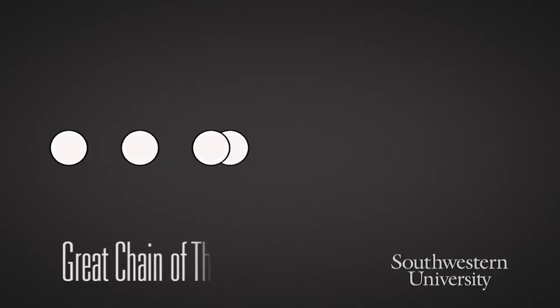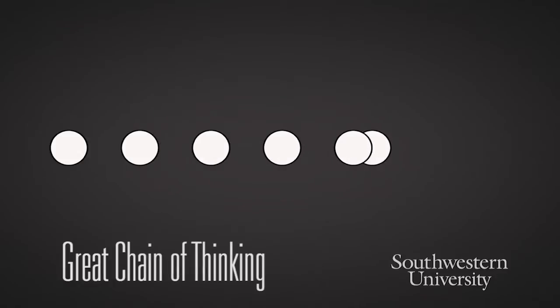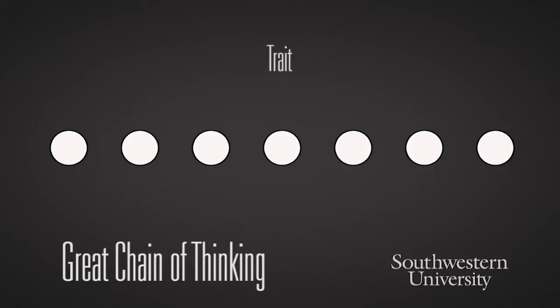Let me give you an example of how this works. I find that the use of seven circles works best. If you can make five logical links between two words, then you have a quality understanding of how these topics connect. So let's choose two words — trait and evolution — and see how we can connect them with five words.